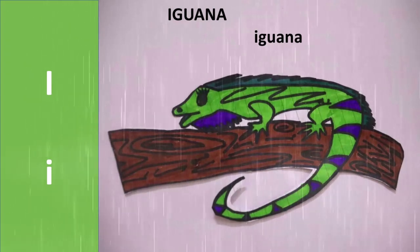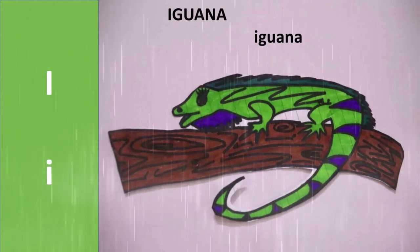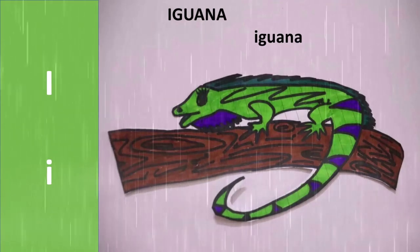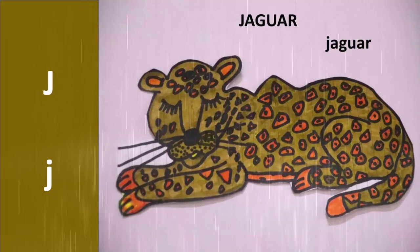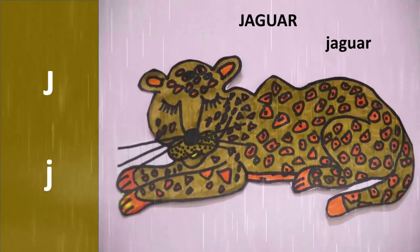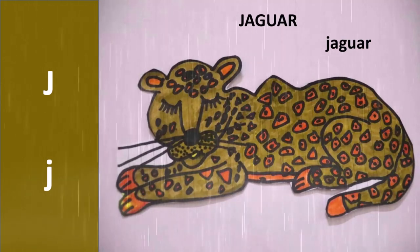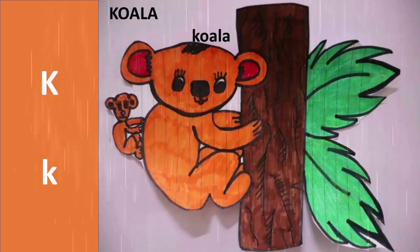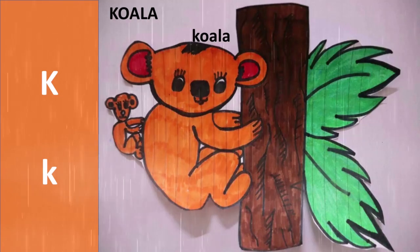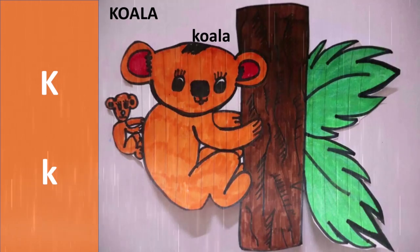Iguana. I is for Iguana. Jaguar. J is for Jaguar. Koala. K is for Koala.